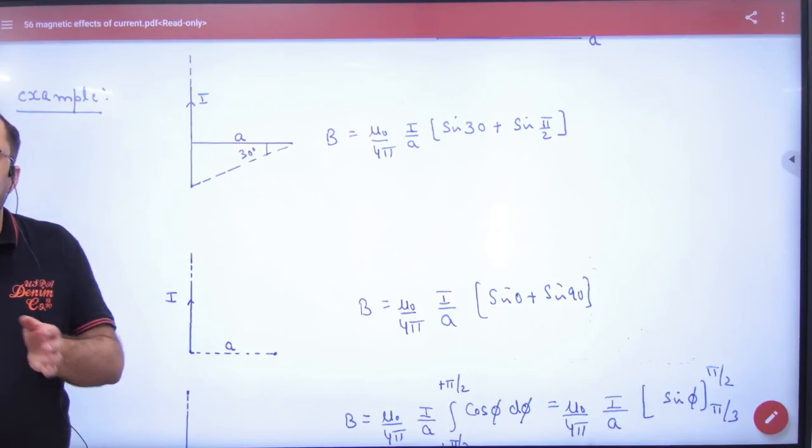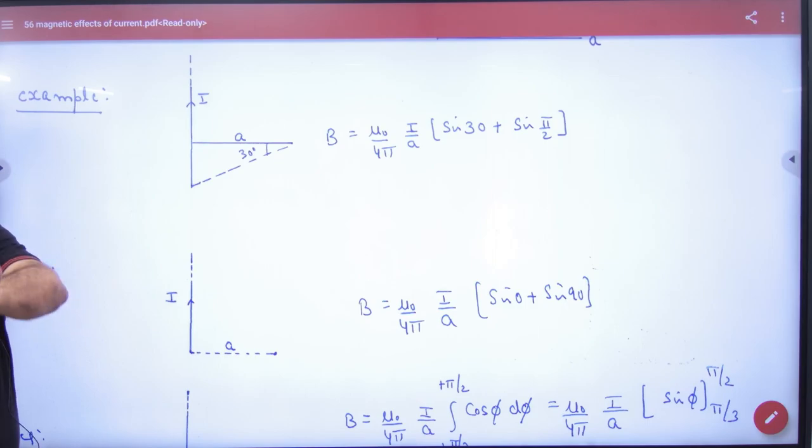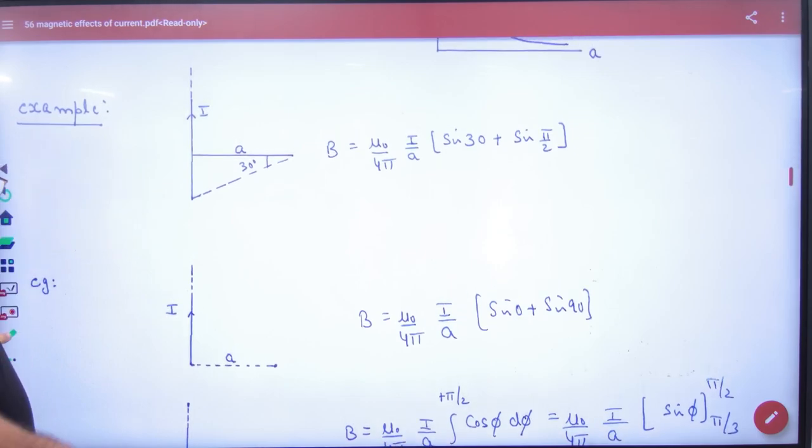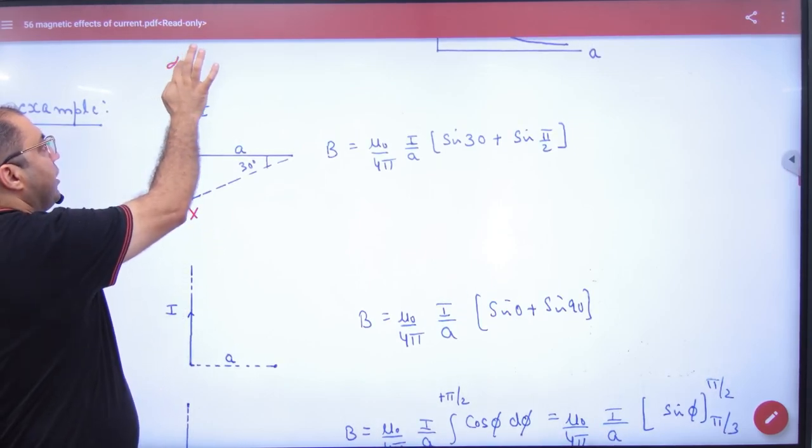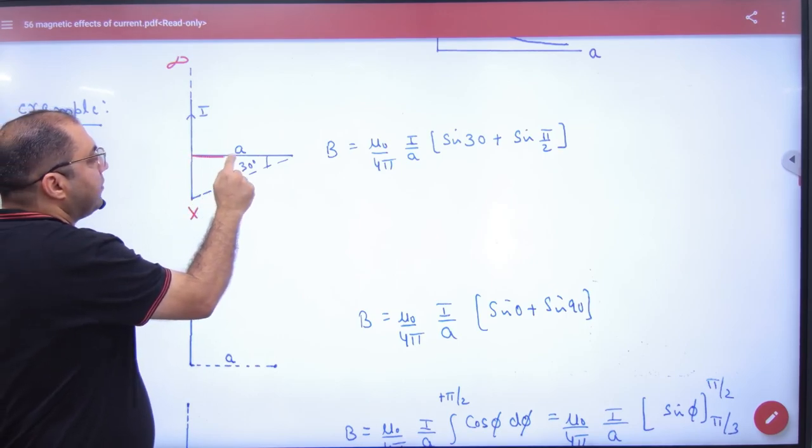An example is the first application of B's formula for a straight wire. Suppose in the question, this wire is starting from here, from point x, and going to infinity, and you have to find B at a distance from this point.